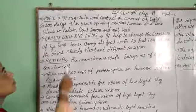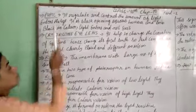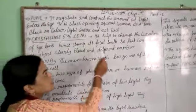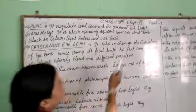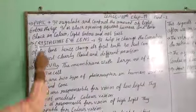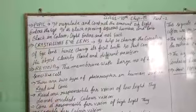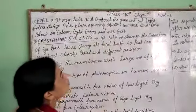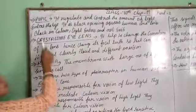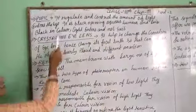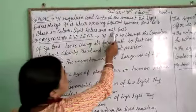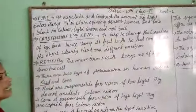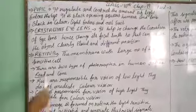In this video we will learn about the pupil. The pupil regulates and controls the amount of light entering the eyes. It is a black opening, associated with aqueous humor and lens, and is black in color. Light enters through it.